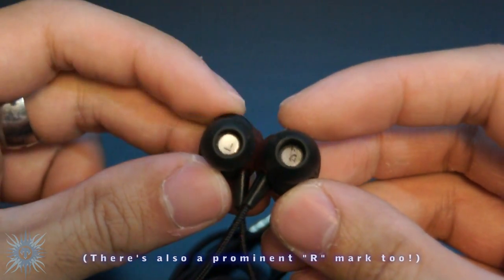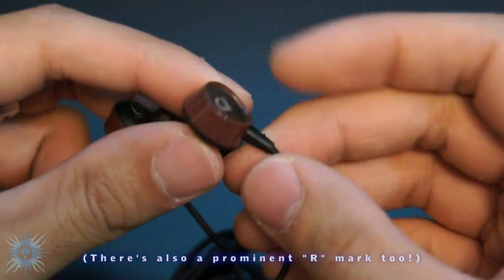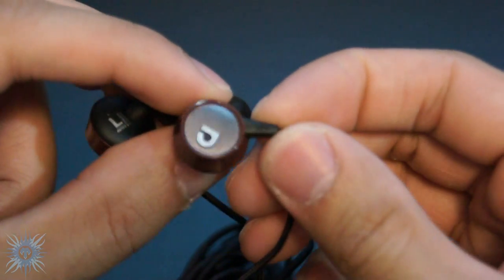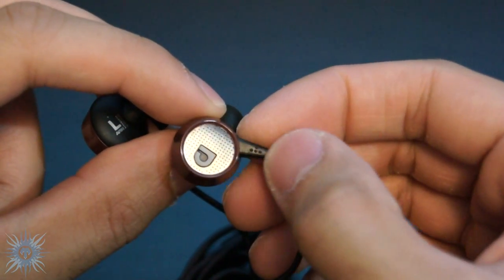You'll also notice the prominent L mark so you can know which side goes where, and if it's night time, there is a braille marking on the right bud so you will still know.